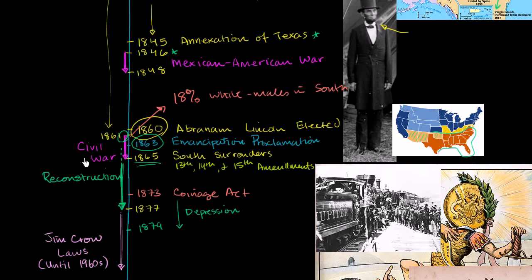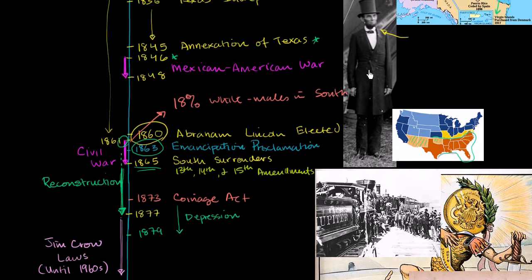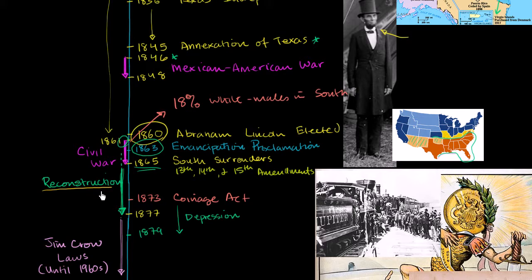Where we left off in the last video, the North had just won the Civil War. Unfortunately for Abraham Lincoln, it was two months after he was assassinated. But now the North was dominant and essentially occupied the South. And we enter a period called Reconstruction. Reconstruction can refer to one of two things: one is just the reconstruction from the war, but it's usually referred to the actual reconstruction of the South, and to some degree, the reform of the South.